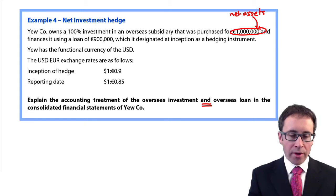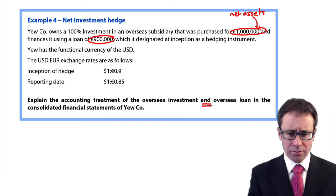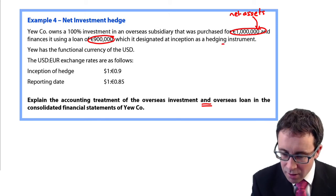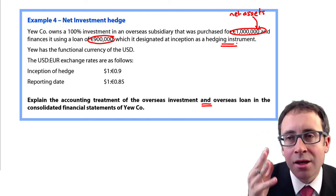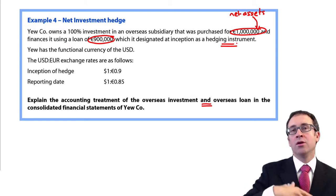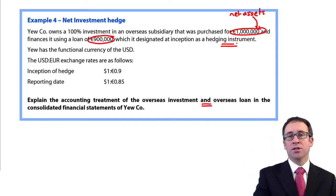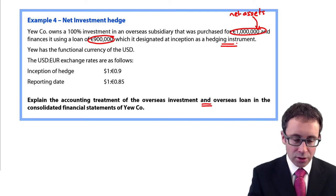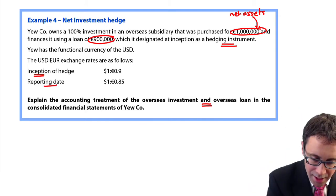We then enter into a hedging transaction whereby we take out a loan of 900,000 euros, which is designated at inception as a hedging instrument. So the rules of hedge accounting apply: any gains and losses on translation of the loan go to OCI, which is against the normal rules for an overseas loan. An overseas loan is a monetary item and gains and losses on it normally go through profit or loss, but if it's designated as a hedging instrument they go to OCI. Your functional currency is the US dollar, which is also your presentation currency, and you have two different exchange rates — one at inception and one at the reporting date.